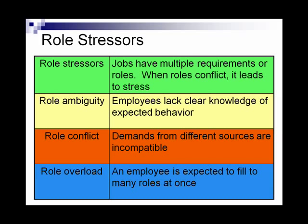Role ambiguity is when employees lack clear knowledge of their expected behavior—they're given a task but aren't quite sure what they're supposed to do.